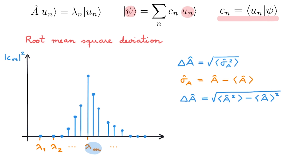So what does the root-mean-square deviation tell us? Mathematically, sigma_A is measuring the distance from the mean of the distribution, so delta A is a measure of the width of this distribution. I will assume that you're comfortable with these concepts — if they sound new to you, then you can find all the details in the video on expectation values linked in the description.